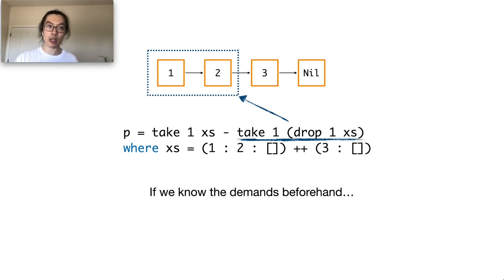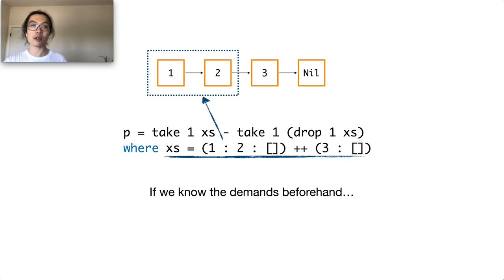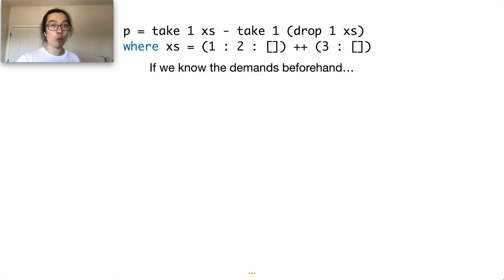And second, we note that the evaluation order does not matter in the performance cost analysis. So we can move the computation of the first two cells to the call site of xs, just like in the call-by-value semantics.